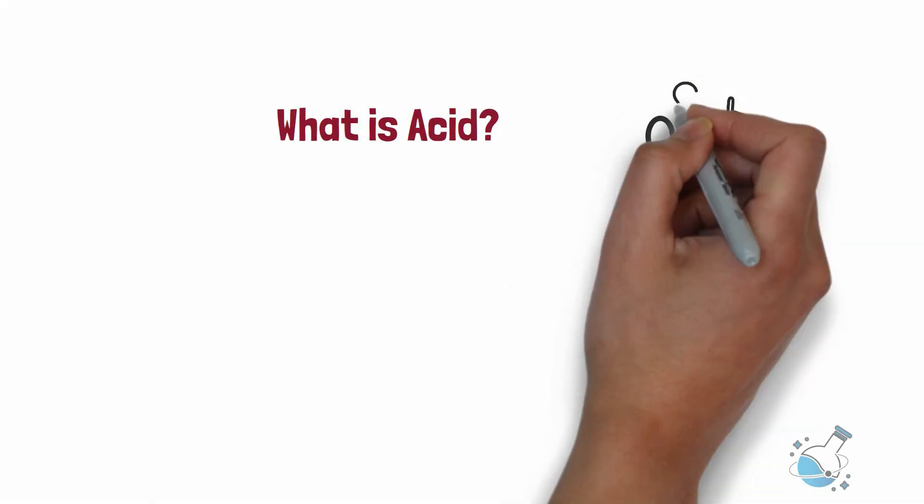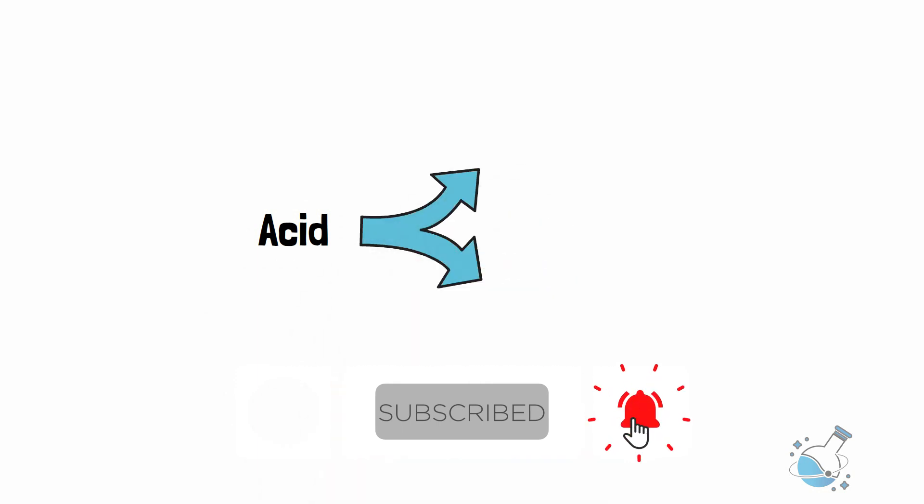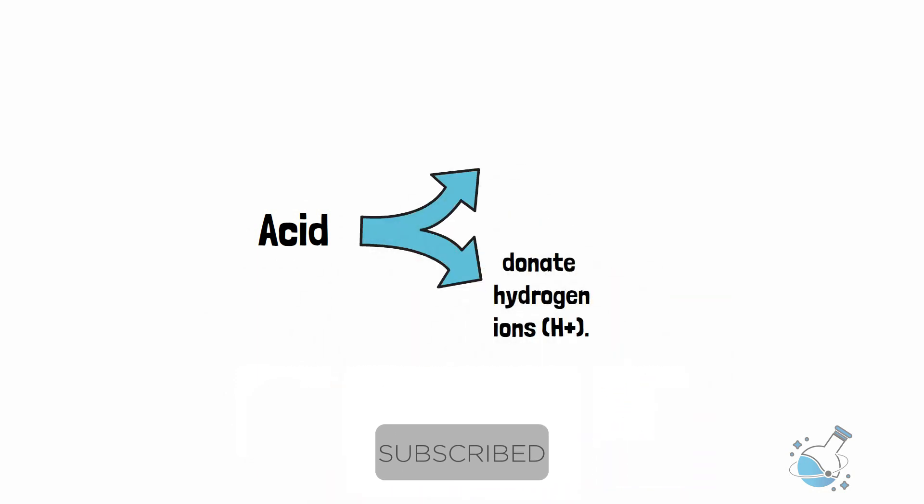What is acid? If you are watching this video, you probably already know that. In chemistry, an acid is a molecule or ion that can accept electron pairs or donate hydrogen ions.